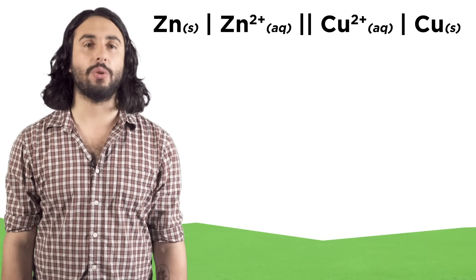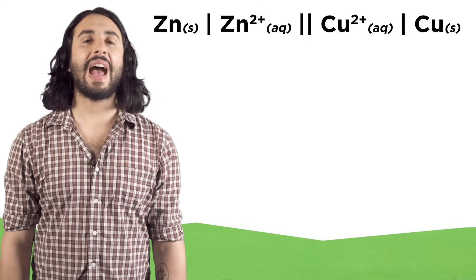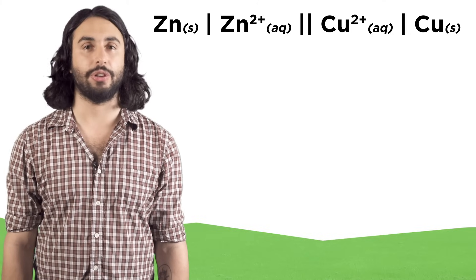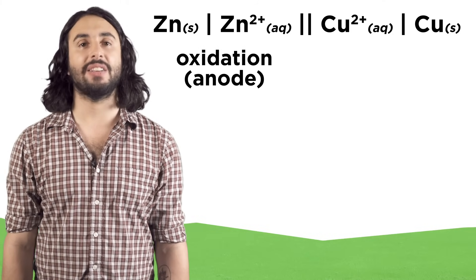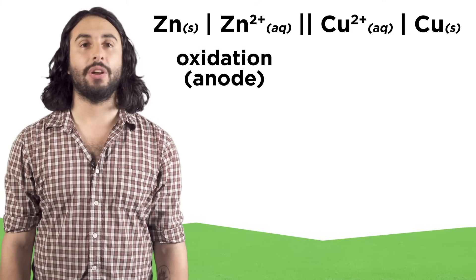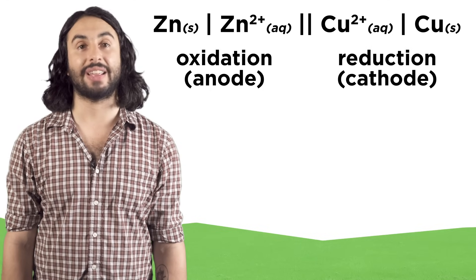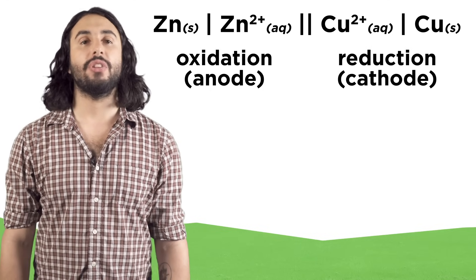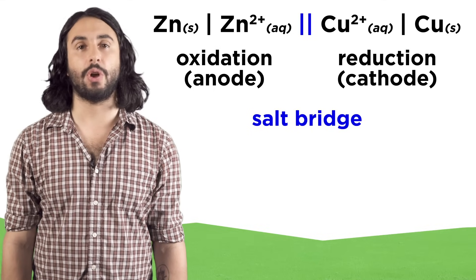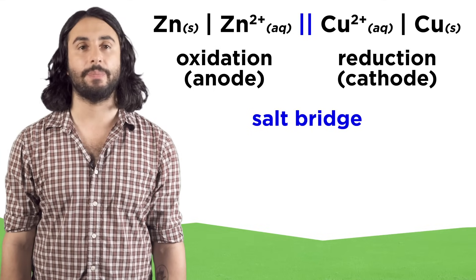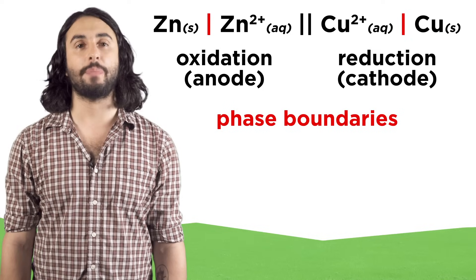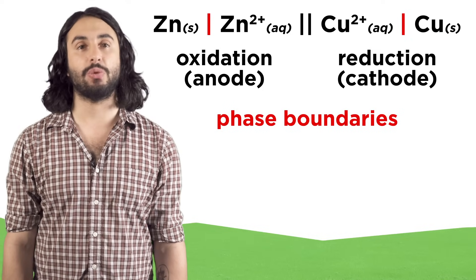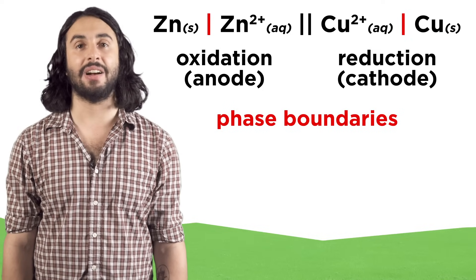When we describe the components of a voltaic cell, we have to use a particular notation. We list the oxidation half-cell, or the anode, on the left, and the reduction half-cell, or the cathode, on the right. The double vertical lines represent the salt bridge that separates the half-cells, and single vertical lines represent phase boundaries, like between a solid electrode and the ions in solution.